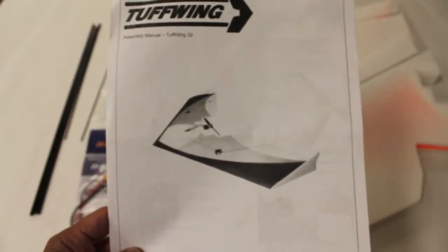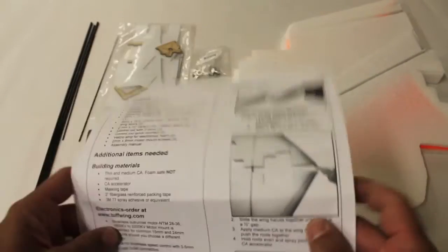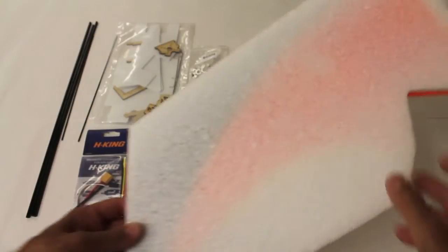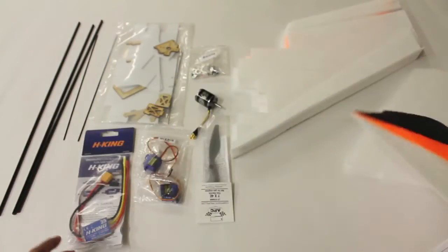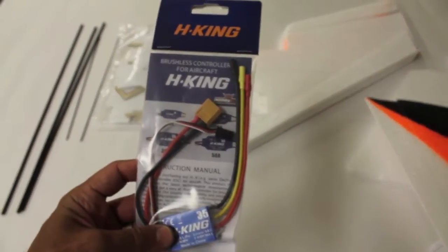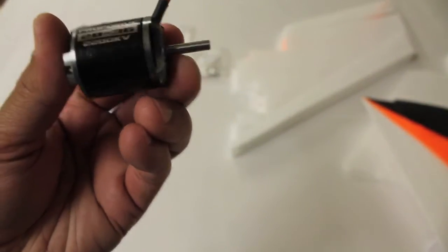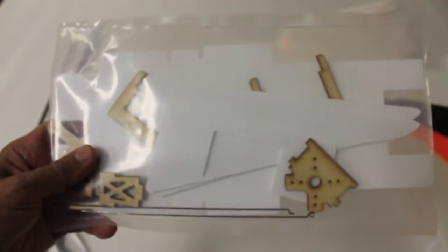The Tuffwing is manufactured right here in Texas and there's a decent build manual that shows how to go through the process. It comes with the wings made out of EPP foam, speed controller, micro servos, prop, motor—a lot of Hobby King stuff here. This is the prop drive 2200 kV motor, a bunch of mounting gear for the motor and prop, prop adapter, and then some different rods or spars that we're going to mount in our wings.